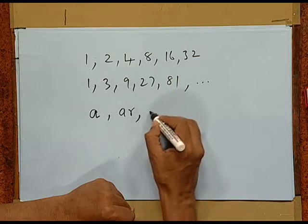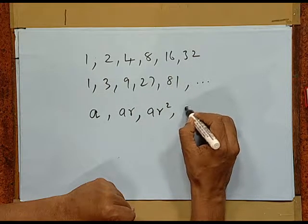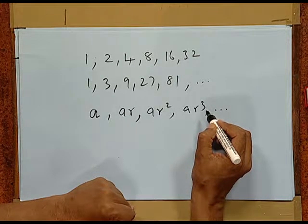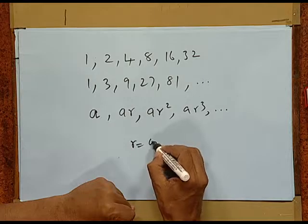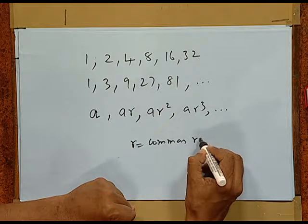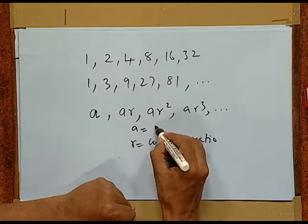In general, we will have terms like first term a, then ar, ar squared, ar cubed, and so on. Here, every term is progressing with a ratio of r. This r is called the common ratio, and a is your first term. To avoid triviality, we assume that r is not 0 — otherwise all terms will be 0. Further, if r is 1, all terms will be a, so there is no progression. In general, r is not equal to 1 and r is never 0.